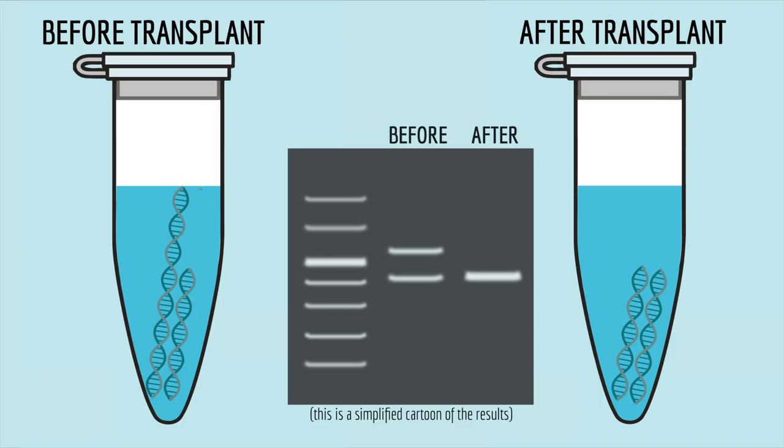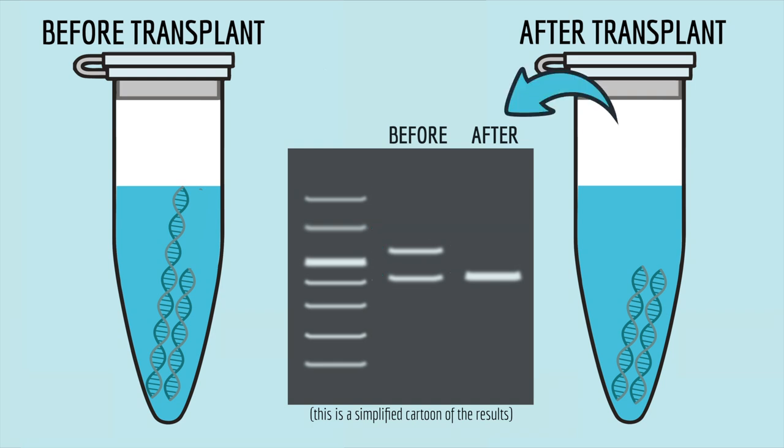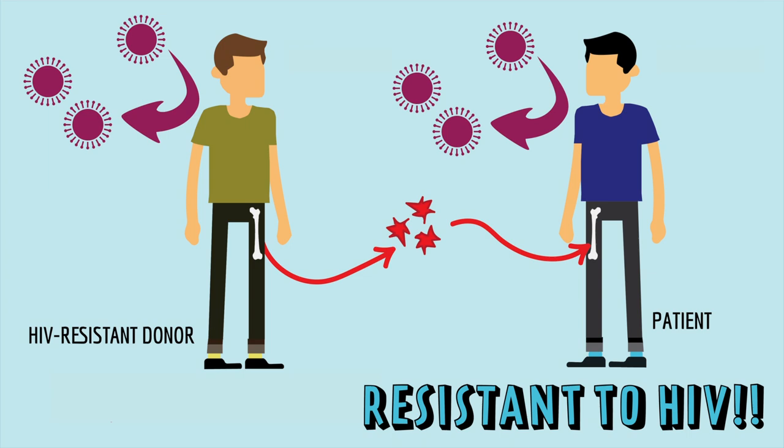When the scientists looked at the gel from the patient's samples before and after the bone marrow transplant, they saw that before the bone marrow transplant, he had a copy of the long, HIV-sensitive CCR5 gene. And after the bone marrow transplant, he only had the short, HIV-resistant copy of CCR5. So, that's how the scientists knew that the bone marrow transplant had made him resistant to HIV.